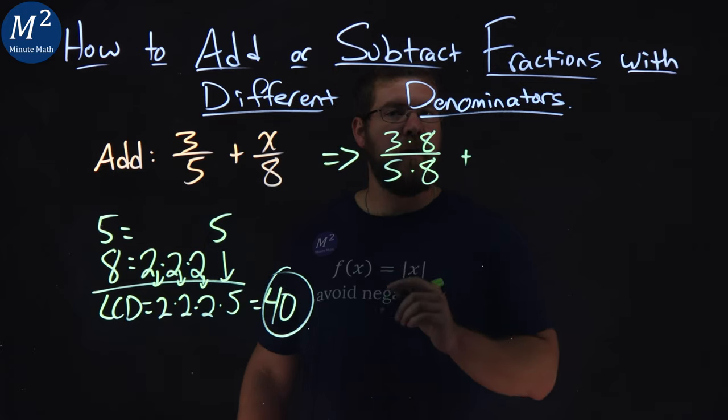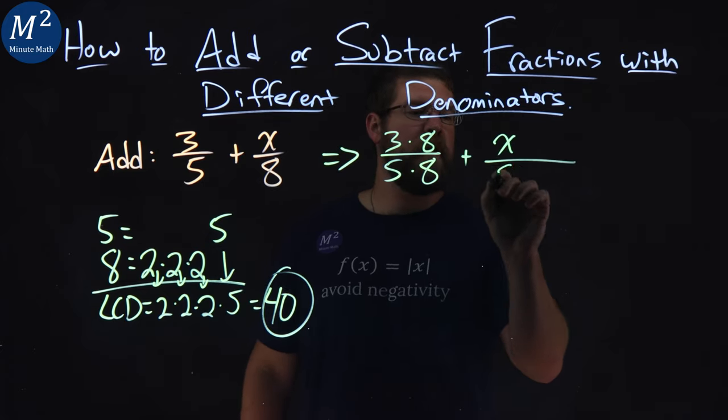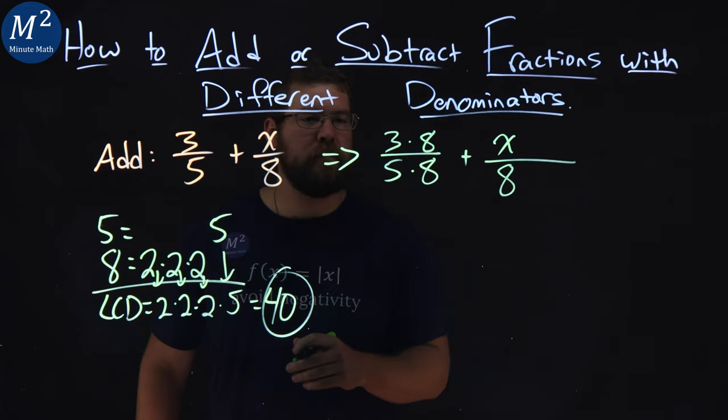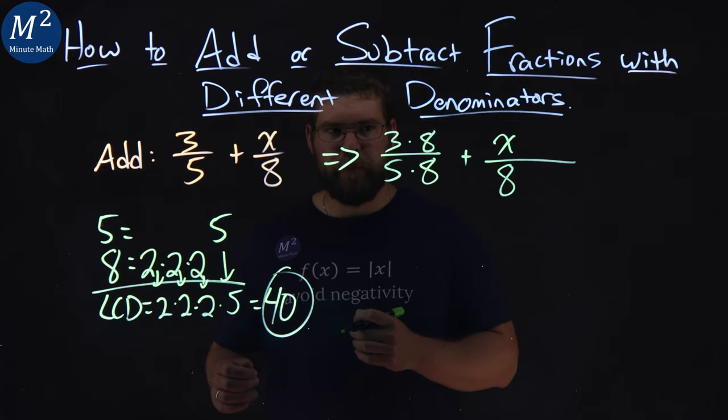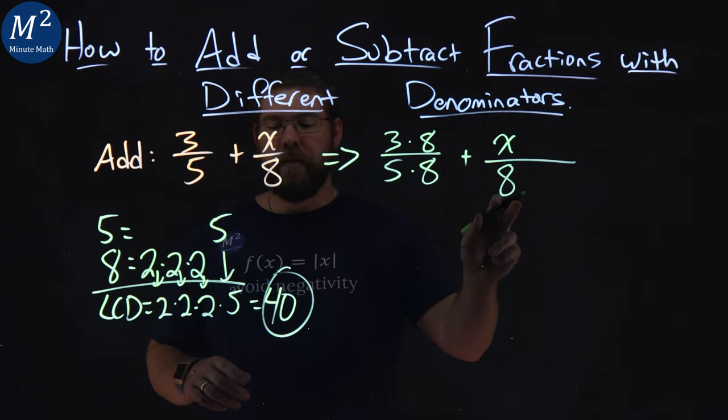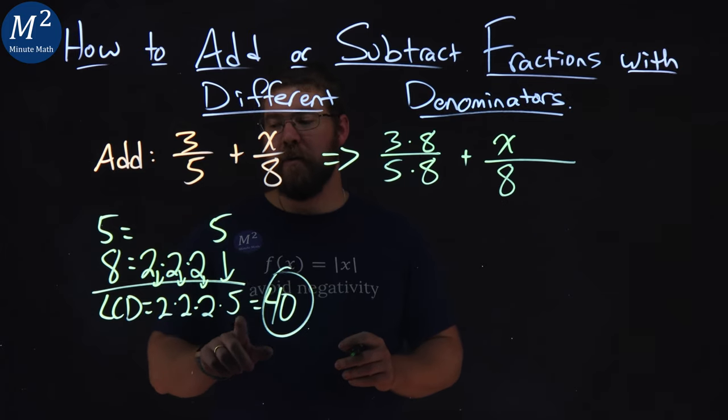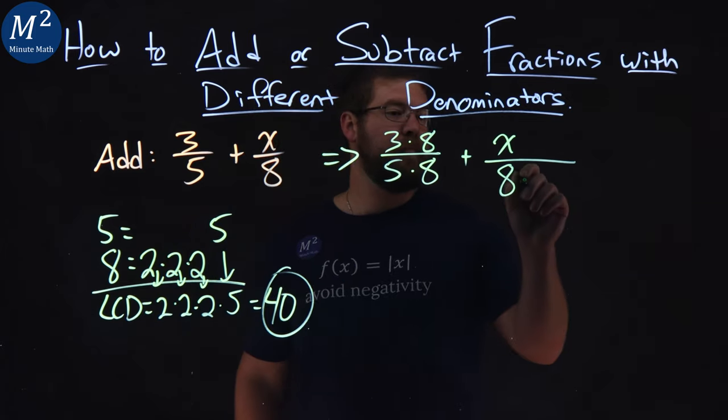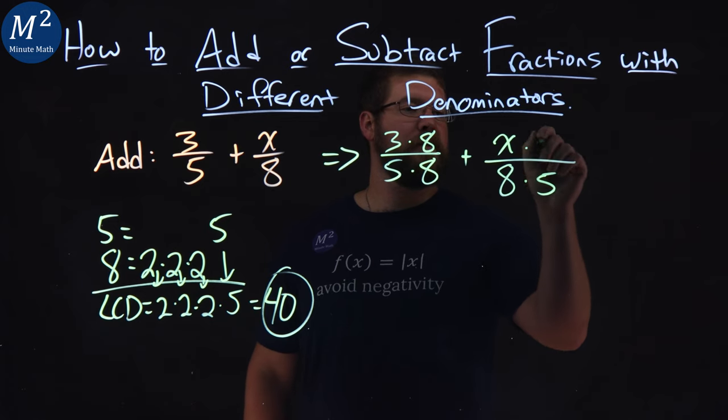Plus, same process with the x over the eight. Don't get tricked up by the variable. Keep following our same rules here. To get 40, we take the eight, we have to multiply it by just the five, the only factor that's missing here. So do the same thing to the x.